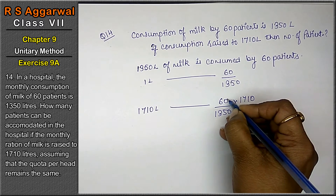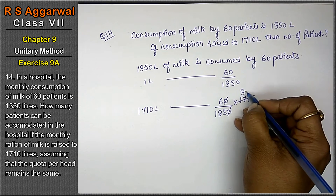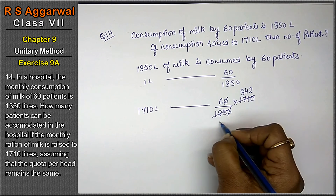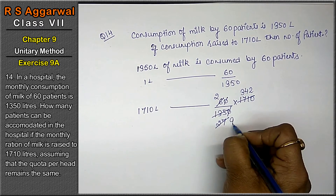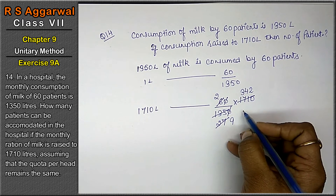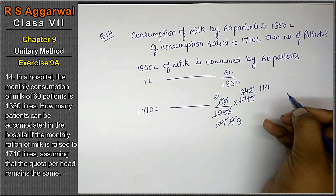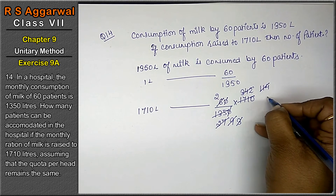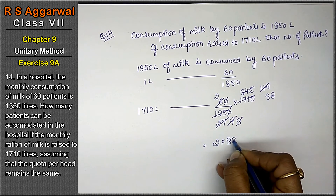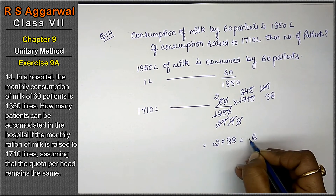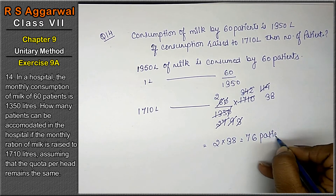The zeros cancel out: 60 upon 135 into 171. Simplifying — 135 divided by 5 is 27, 171 divided by 9 is 19, 60 divided by 5 is 12, 12 divided by 3 is 4, 27 divided by 9 is 3, and 19 divided by... working through: 2 times 38 equals 76. So 76 patients is the answer.